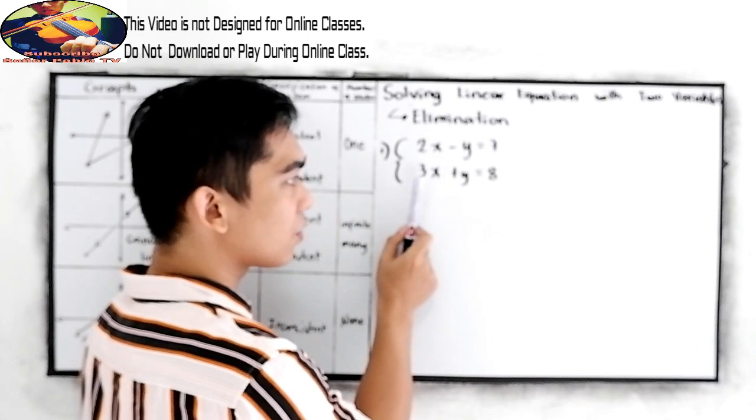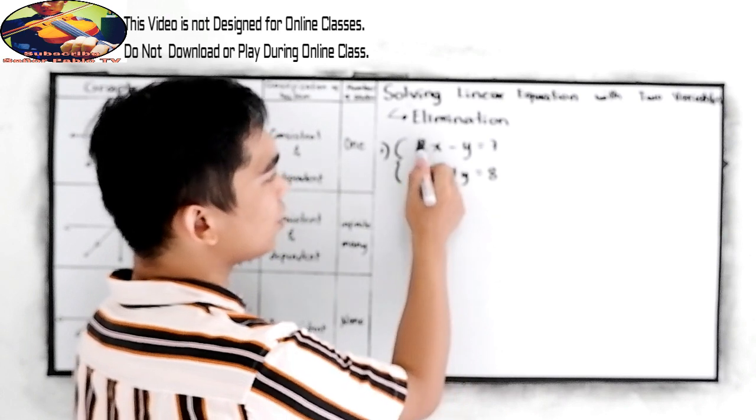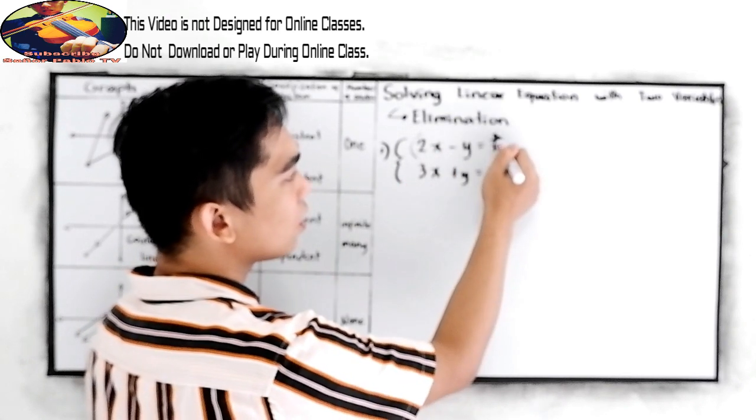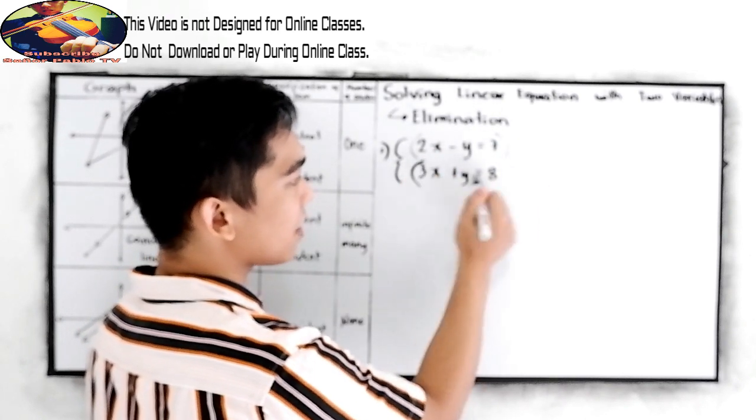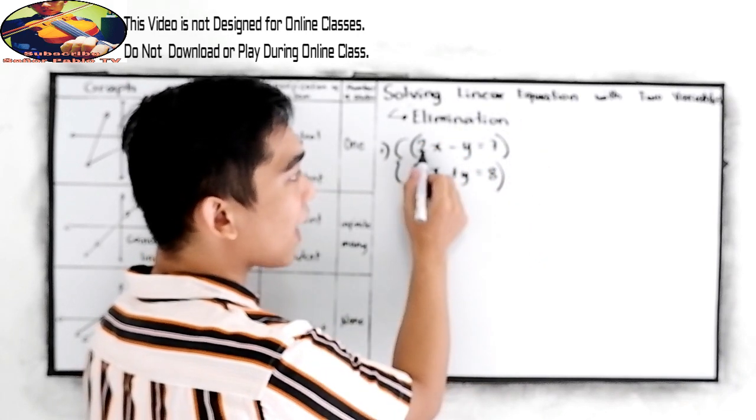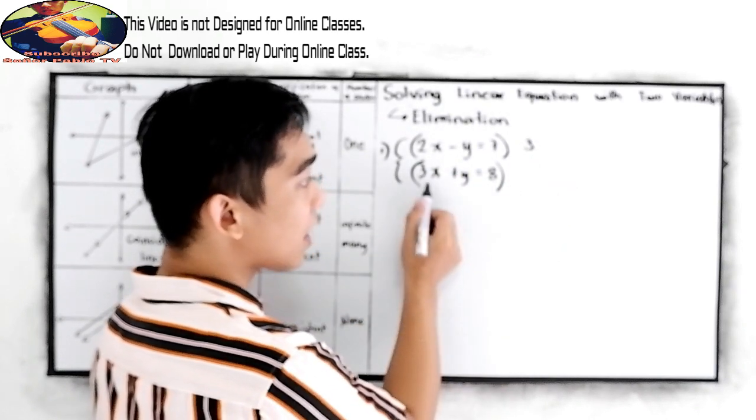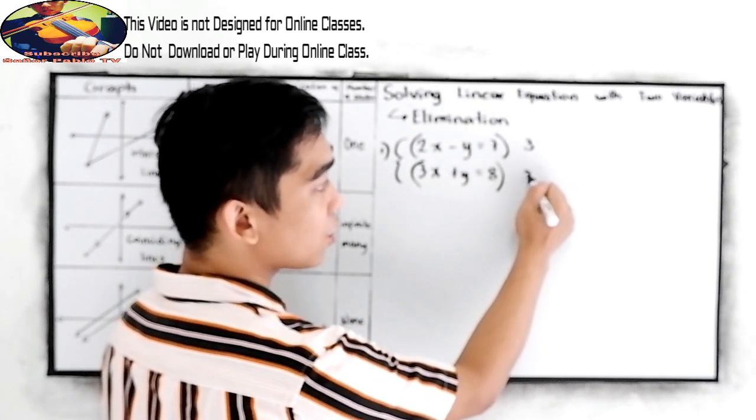2x and 3x. So all we need to do is to make them the same. So we need to multiply our equation 1 by 3, and our equation 2, multiply it by 2.